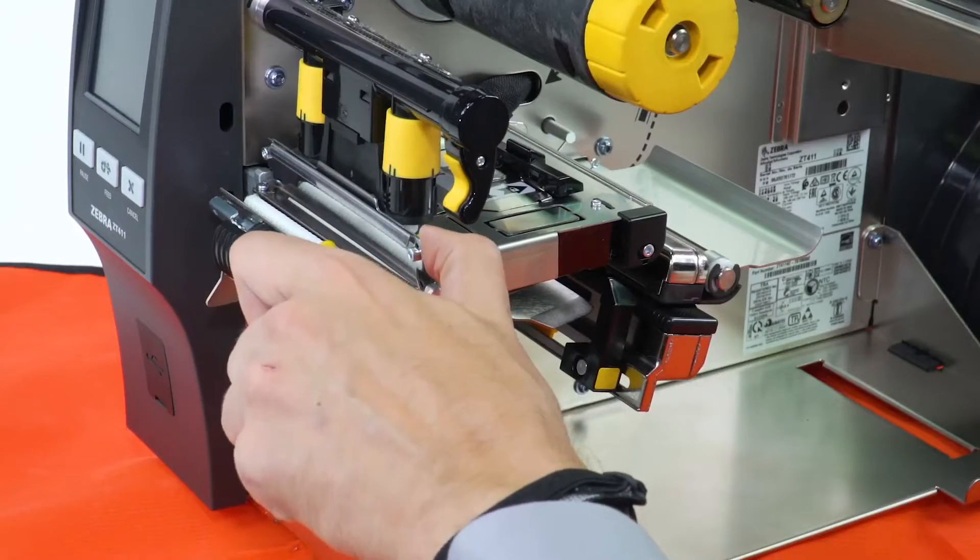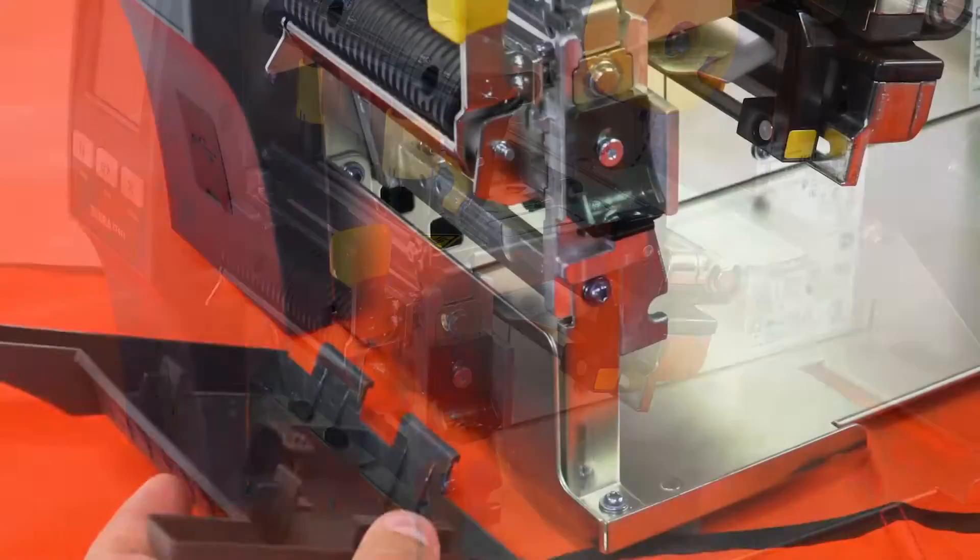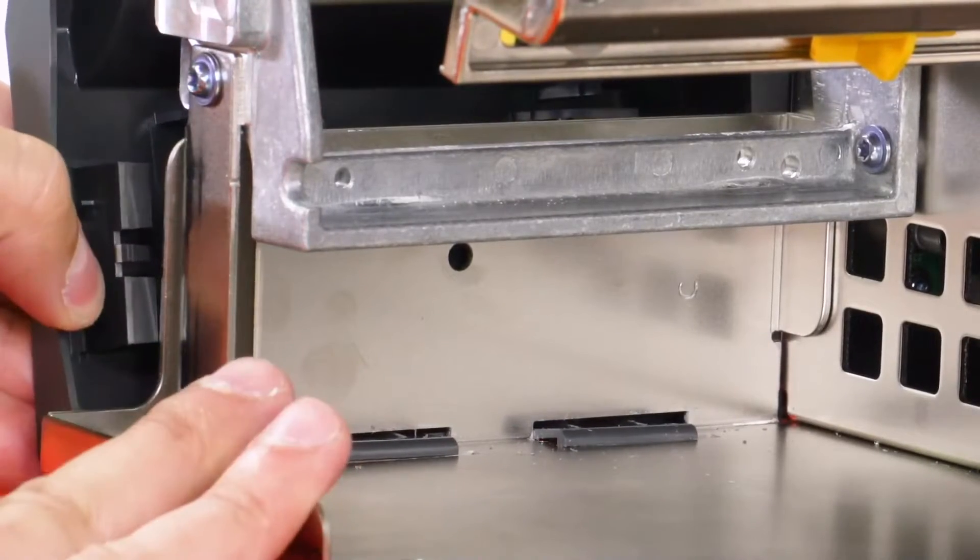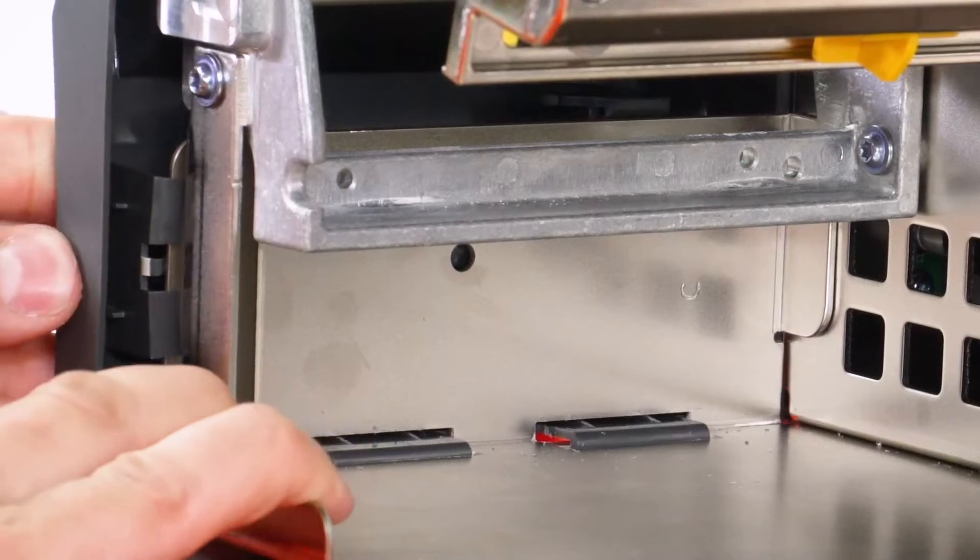Close the peel. Slide the lower front panel tabs onto the mounting slots. Snap it into place.